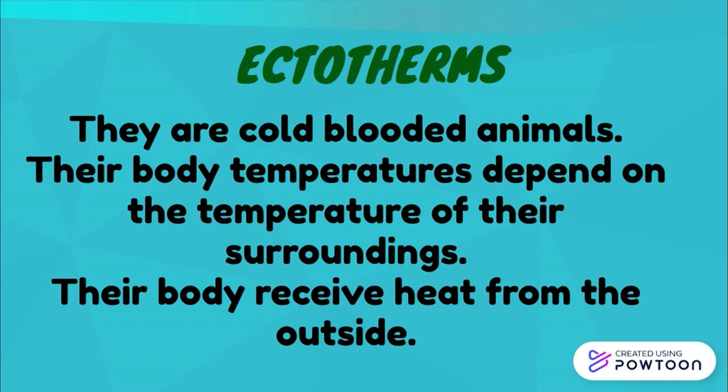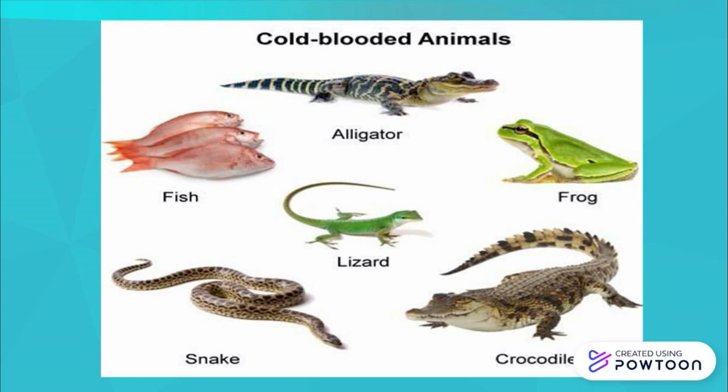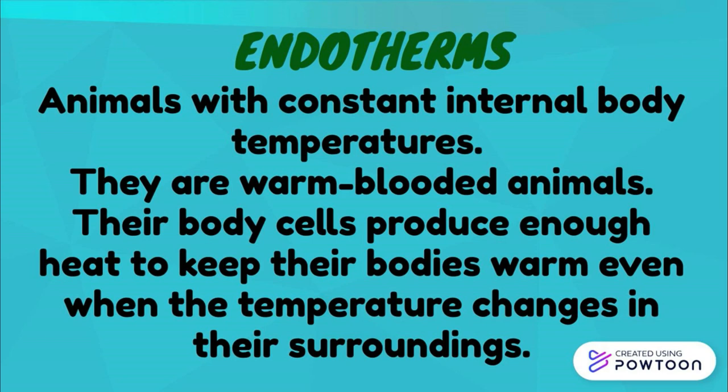Ectotherms are cold-blooded animals. Their body temperatures depend on the temperature of their surroundings, and their bodies receive heat from the outside. Examples of cold-blooded animals are alligator, fish, lizard, snake, frog, and crocodile.